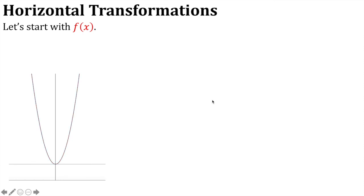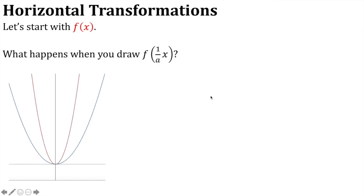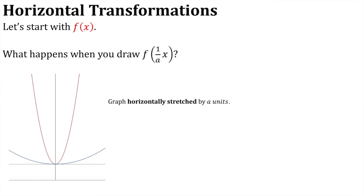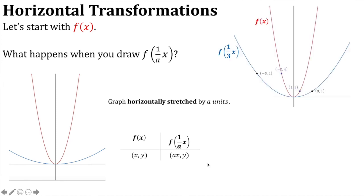What happens when we draw f((1/a)·x)? The graph appears to go outwards — it's being horizontally stretched by a units, so each x-ordinate is multiplied by a. For a specialised example with f of x having points (−2, 4) and (1, 1): on the graph of f((1/3)·x), we multiply x-ordinates by 3, giving (−6, 4) and (3, 1).